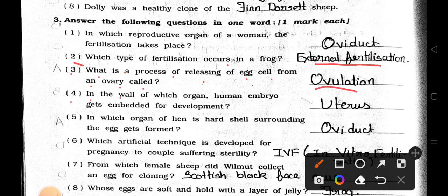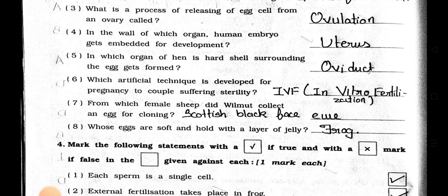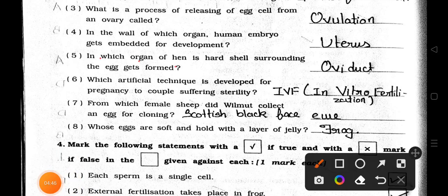Number 4: In the wall of which organ does the human embryo get embedded for development? Answer is Uterus. Number 5: In which organ of the hen is a hard cell surrounding the egg formed? Answer is Oviduct. Number 6: Which artificial technique is developed for pregnancy for couples suffering from sterility? Answer is IVF. Its full form is In Vitro Fertilization. Number 7: From which female sheep did Wilmut collect an egg for cloning? Answer is Scottish Blackface Ewe.